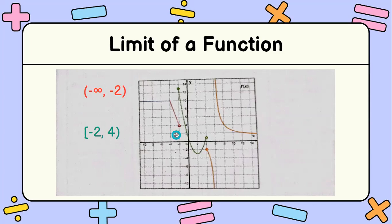The green function goes from negative 2 up to positive 4, where negative 2 is included — its dot is shaded, unlike the hollow negative 2 in the red function. The green function continues until positive 4, where positive 4 is not included in the function — it is hollow — so it is written in parenthesis, not in brackets.